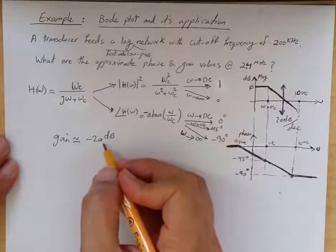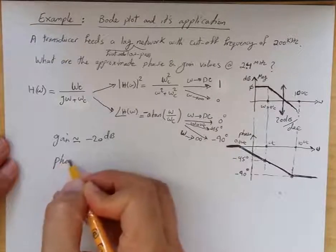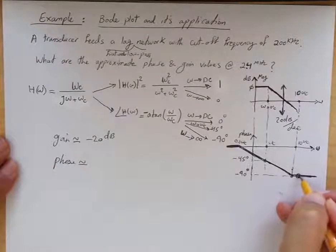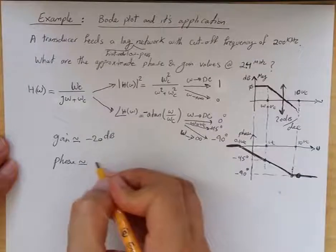So we can approximate the gain as approximately minus 20 dB, actually a little bit less. The phase, since we're talking about a point like this, is approximately minus 90 degrees.